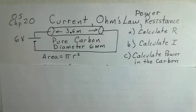Professor Clements with you again. Another example of calculating resistance, calculating current, and calculating power in a circuit. Here we have a 6 volt battery. We have a pure carbon rod that's 3.6 meters long, has a diameter of 6 millimeters.